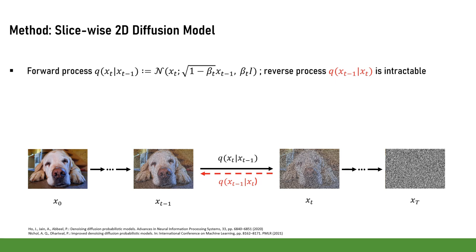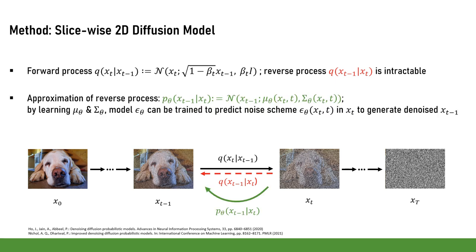If we want to reverse the process, the problem is that q(xₜ₋₁|xₜ) is intractable. We therefore approximate the reverse process using pθ. pθ is defined as a normal distribution with mean μθ and variance σθ. The aim is to determine μθ and σθ so that pθ and q match.